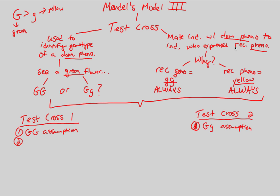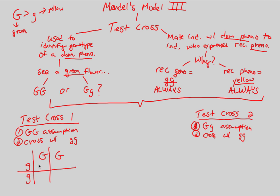Now we're going to do the same thing on both ends: cross with gg. Let's do a basic Punnett square for Test Cross 1. The individual assumed to be GG contributes capital G and capital G gametes; the known yellow individual contributes lowercase g and lowercase g. Cross-multiplying the Punnett square, every single offspring comes out capital G lowercase g — Gg, Gg, Gg, Gg. You're getting the same exact genotype in every cell.